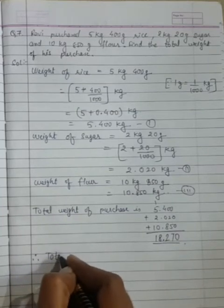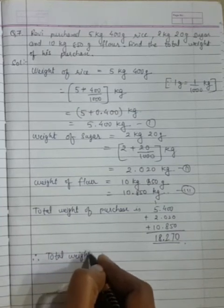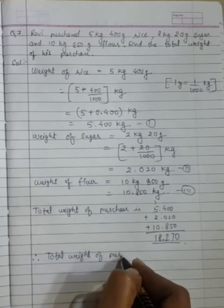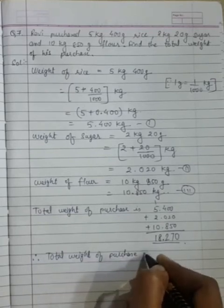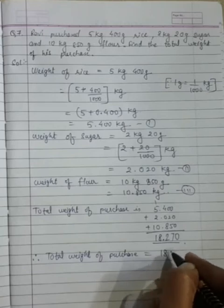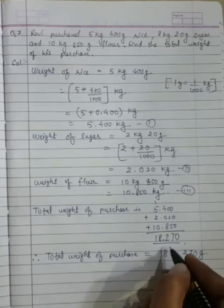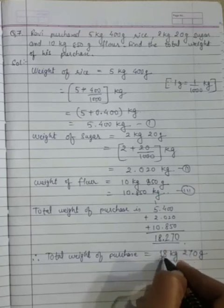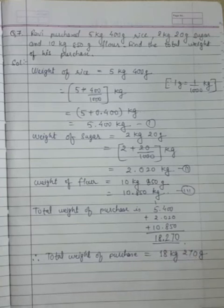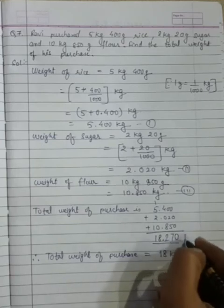Therefore, total weight of purchase equals 18 kg 270 grams. We have converted into kgs and grams in this standard form. This is kg.